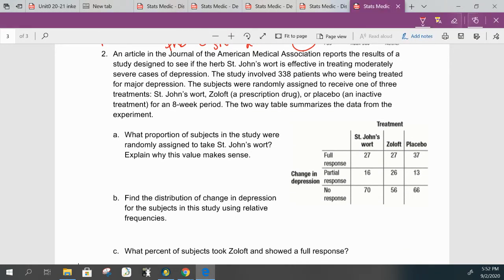Alright, our second example goes back to the two-way tables and the distributions, the relative frequencies. An article in the Journal of American Medicine Association reports the results of a study designed to see if the herb St. John's wort is effective in treating moderately severe cases of depression. The study involved 338 patients, and anytime you see a number for a count, you better underline it or highlight it, who were being treated for major depression. The subjects were randomly assigned—that is important, we'll talk about more why later—to receive one of three treatments: St. John's wort, Zoloft, or a placebo, which is inactive, for an eight-week period of time. The two-way table summarizes the data from the experiment.